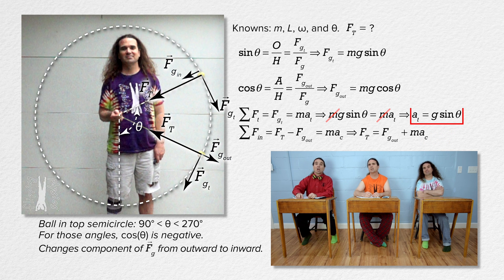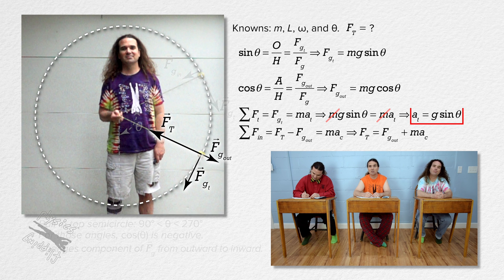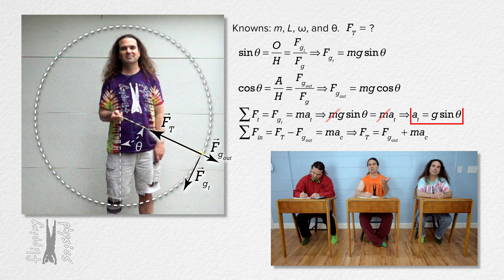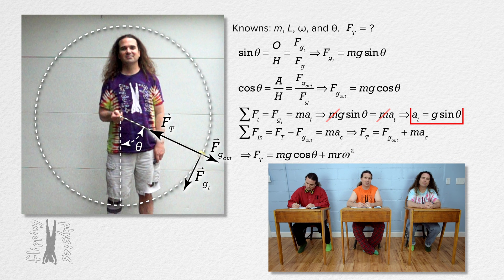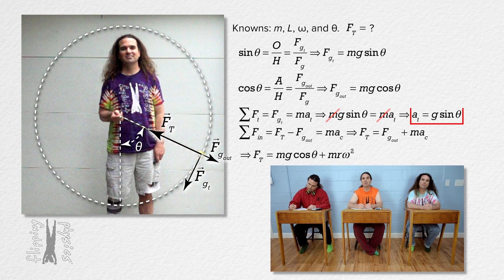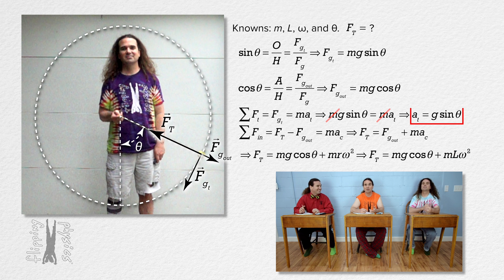So, force of tension equals the outward force of gravity component plus mass times centripetal acceleration. We have substitutions available: mass times acceleration due to gravity times cosine theta, plus mass times radius times angular speed squared. The radius equals capital L, the length of the string. So, the force of tension equals m·g·cos θ + m·L·ω².